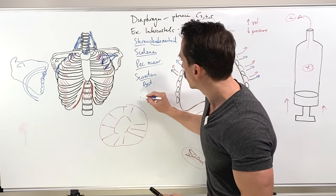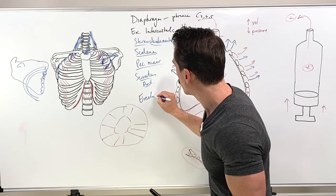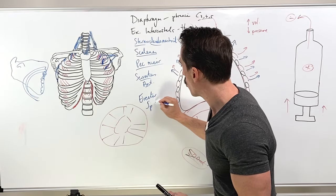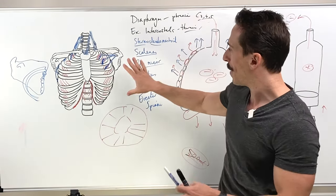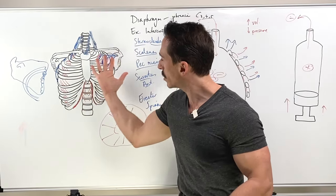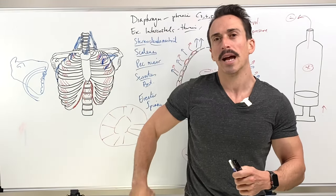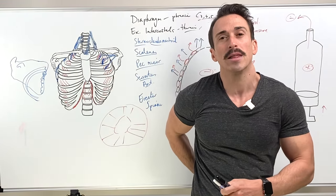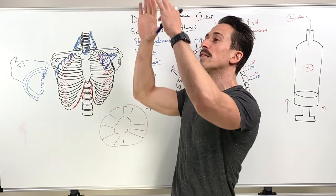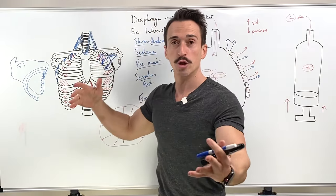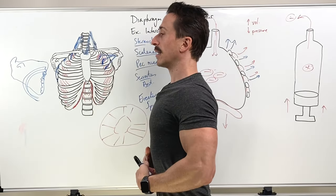Now the very last one I want to talk about is going to be the erector spinae muscles. And this is a group of muscles. Now we don't have the back here, but if we were to turn this around, the erector spinae muscles has its origins at the iliac, at the sacrum, at the lumbar region. So right down the bottom and has various insertions as it moves up the vertebrae.